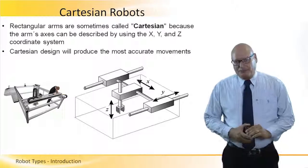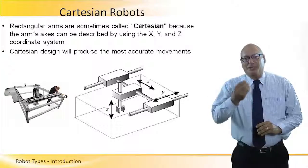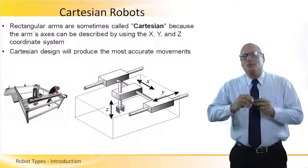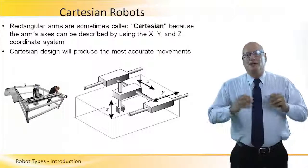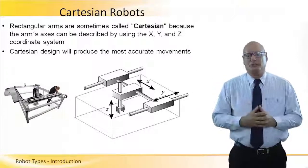Let's look at the Cartesian robot. It's the first one of the group. Rectangular arms are sometimes called Cartesian because the arm's axes can be described by using the X, Y, and Z coordinate system.